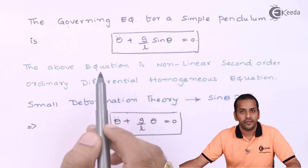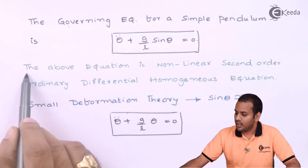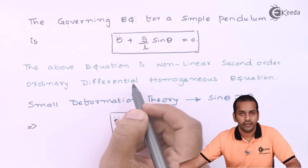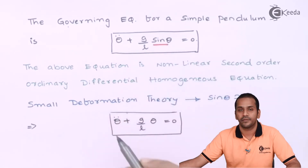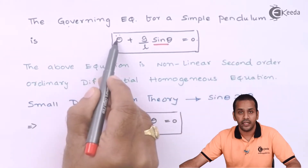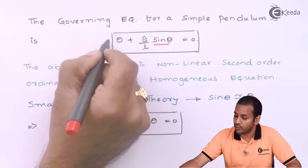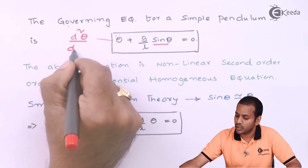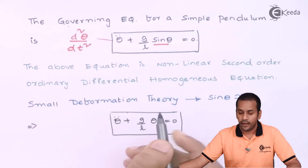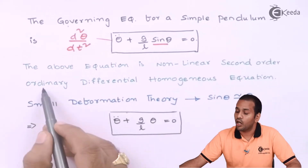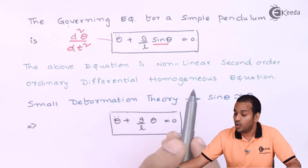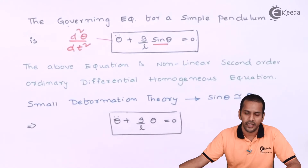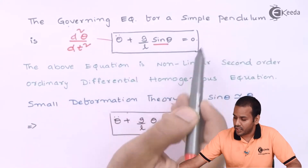What is the nature of this equation? It is non-linear because of the sinθ term. It is also second order — θ̈ is d²θ/dt² — and it is an ordinary, homogeneous differential equation. So this is a second-order, nonlinear, ordinary homogeneous differential equation, and it is the governing equation for the simple pendulum.